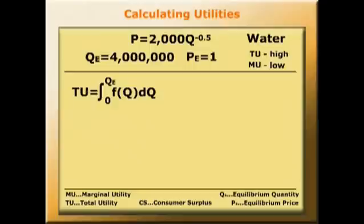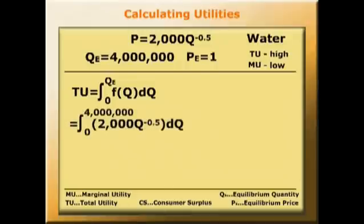So the total utility is the integral from zero up to QE of f of Q dQ, where the integral is from zero to four million, 2000Q to the minus 0.5 dQ.